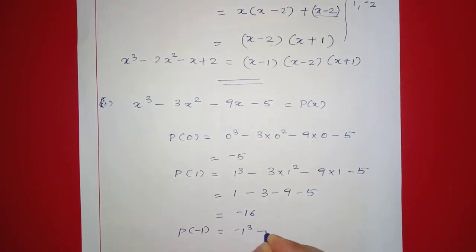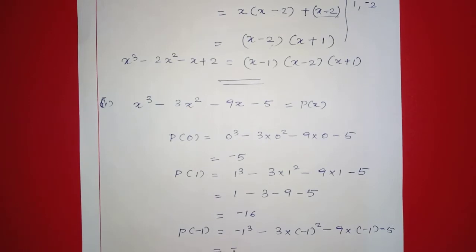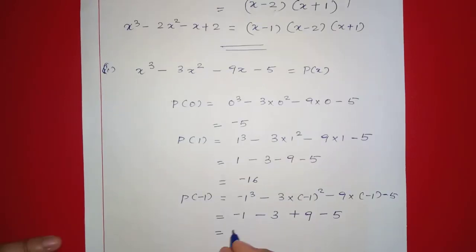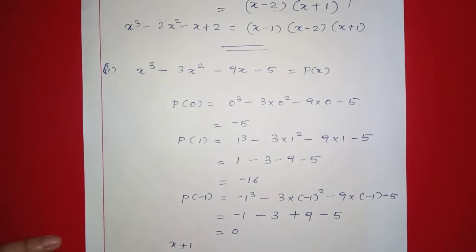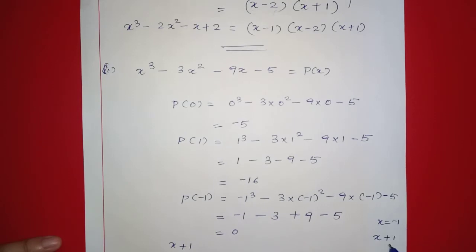P of negative 1: negative 1 raised to 3, minus 3 into negative 1 squared, minus 9 into negative 1, minus 5. That is negative 1, minus 3, plus 9, minus 5, which equals 0. So P of negative 1 equals 0.